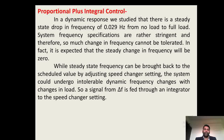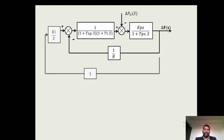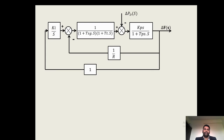The system could undergo intolerable dynamic frequency changes with changes in load. So, a signal from delta f is fed back through an integrator to the speed changer setting. We will now see the changes in the complete block diagram representation of load frequency control. This is the complete block diagram representation. Here, we will add the integrator block before the speed changer setting. This system then becomes the proportional plus integral control action for load frequency control.